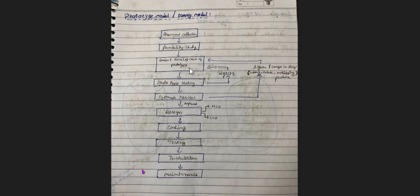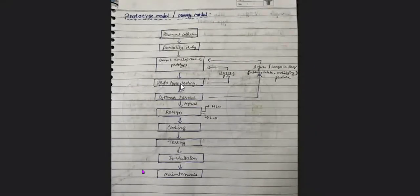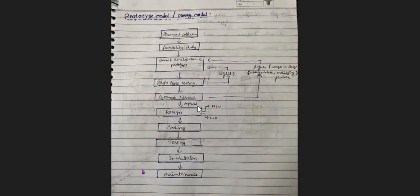Once the dummy model is created, it goes through prototype testing. If defects are found, they are communicated back to the design team, corrected, and retested. Once prototype testing is done, the dummy model is given to the customer to review — to verify that the software meets the requirements.